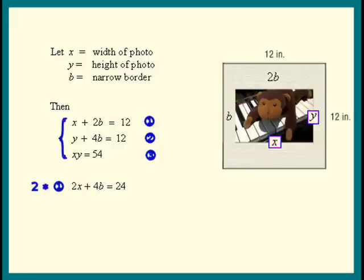I'm going to copy equation 2 right below it because we're going to subtract these two equations to get rid of the B's. Subtracting, we get 2X minus Y—the 4B's cancelled—equals 24 minus 12, which is 12. Now we have another equation with just X's and Y's. Let's call that equation 4.